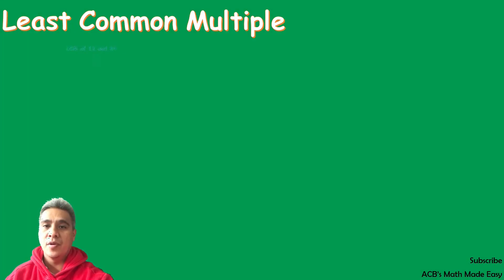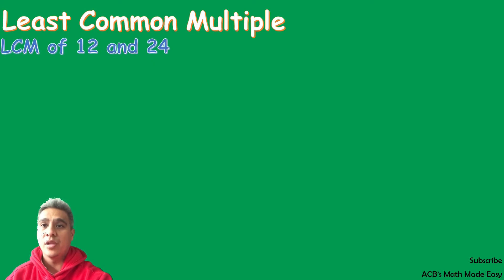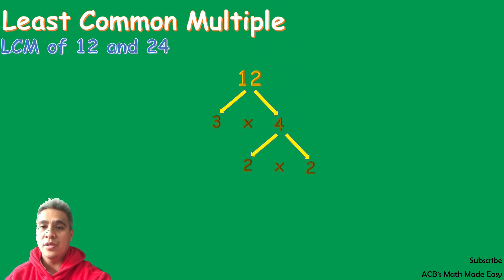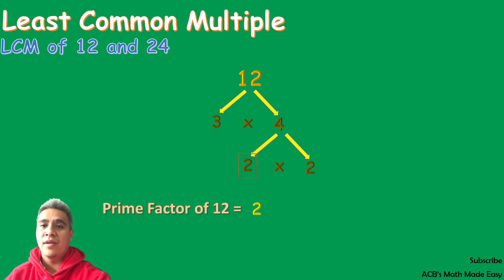Our second example is the LCM of 12 and 24. 12 can be factored out by 3 times 4. 4 is a composite number, so we still need to factor it by 2 times 2. So the prime factors of 12 are 2, 2, and 3.